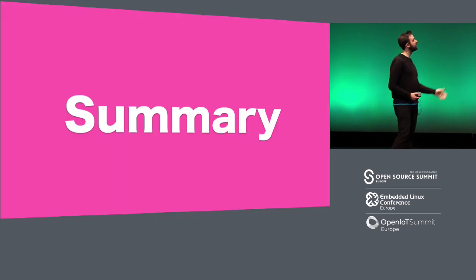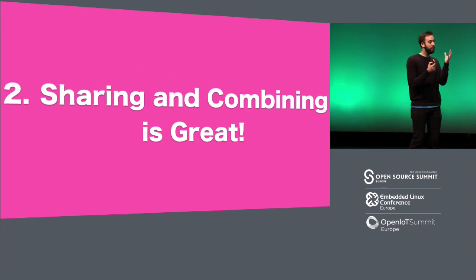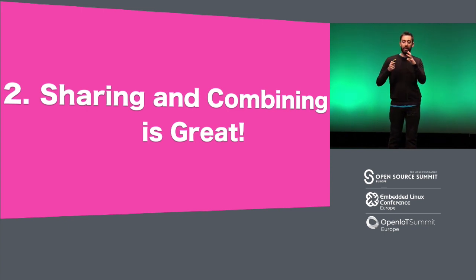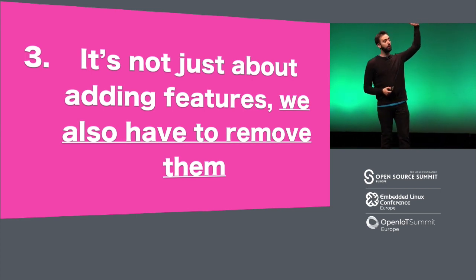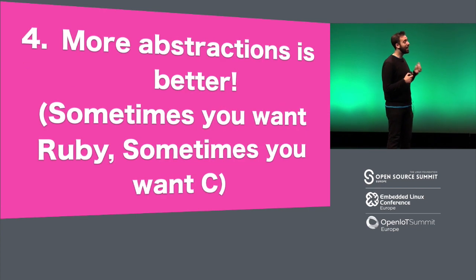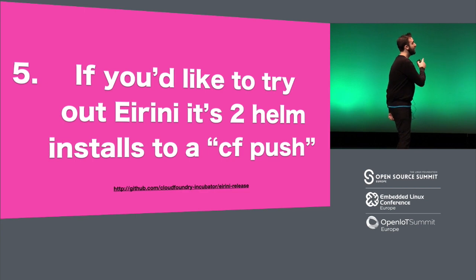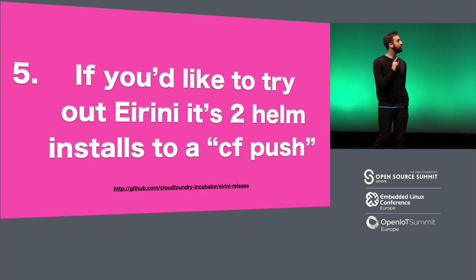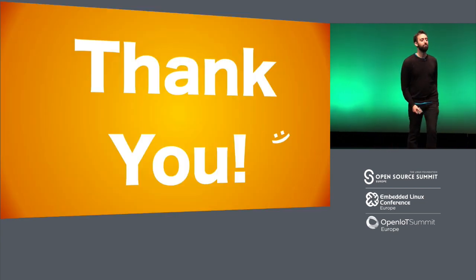Five-minute talk, five bullet points. One: open source is fantastic because it lets us share and consume, and bringing these things together is amazing because we can build things that we couldn't build alone. But it's not just about adding features — we have to think about what we remove to make these systems easier for people to use. You can't add features to C to make Ruby; you have to remove an abstraction. Sometimes you need Ruby, sometimes you need C. If you're interested and you'd like to try out Irini and you have a Kubernetes cluster, there are two home installs to try out the CF push thing — the URL's at the bottom. Thank you very much.